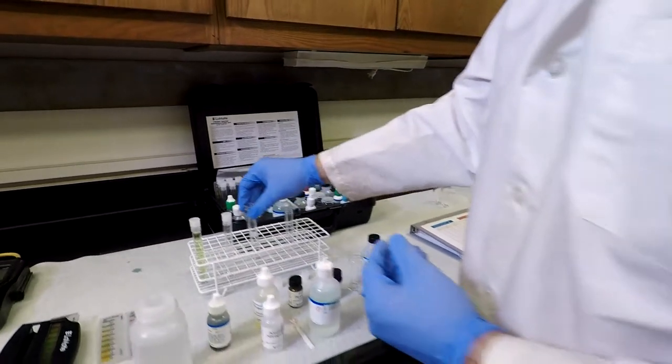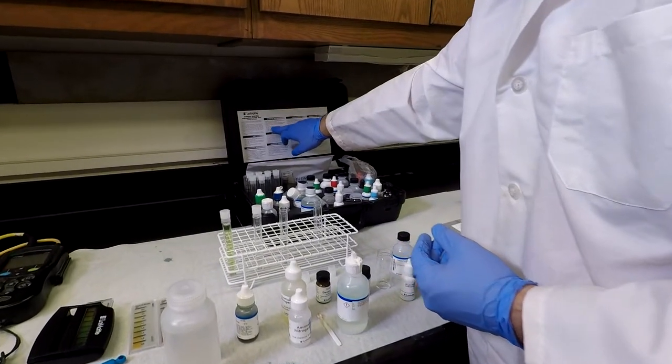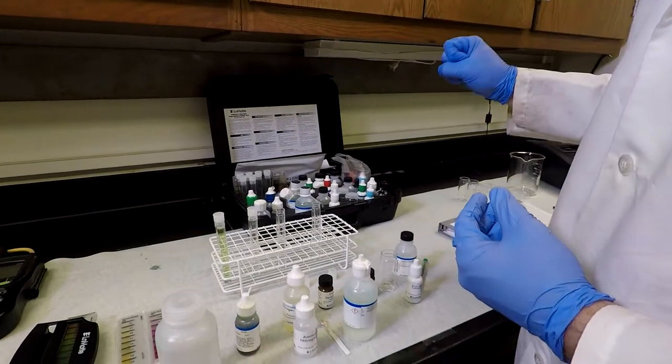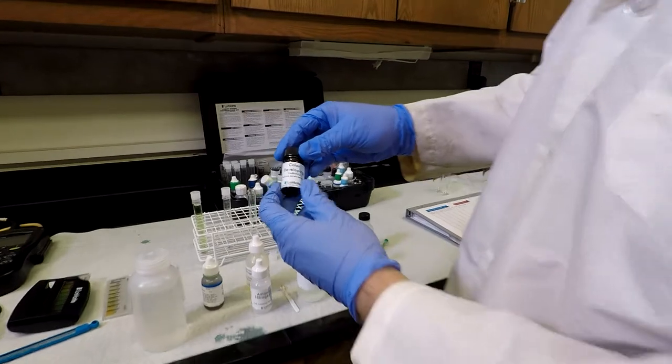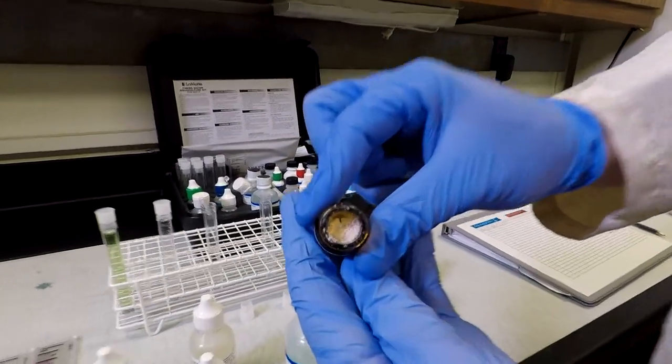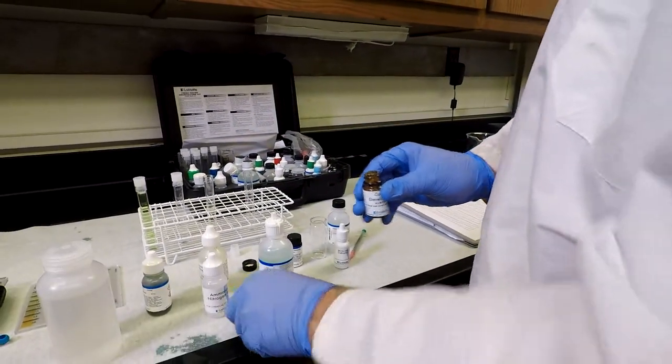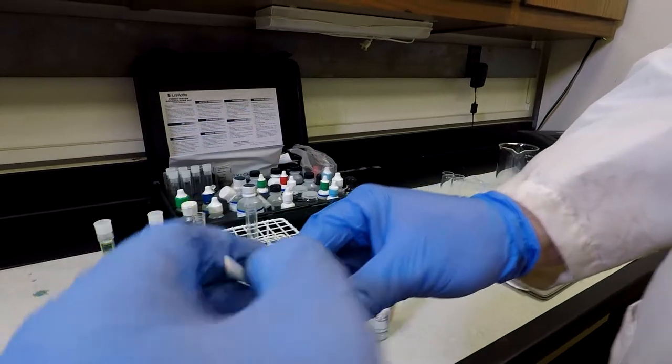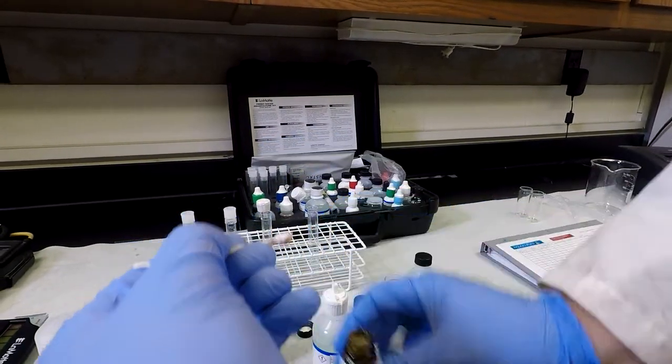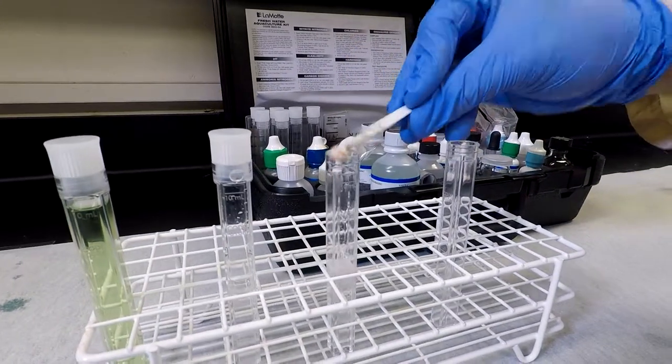Once I've done this, following the instructions, I'm going to use the 0.1 gram spoon to add 0.1 grams of the color developing reagent. I have that here in this small container. It's kind of a powdery substance. And I'll take my little 0.1 gram spoon here and collect a level spoon sample. Add this into my test.